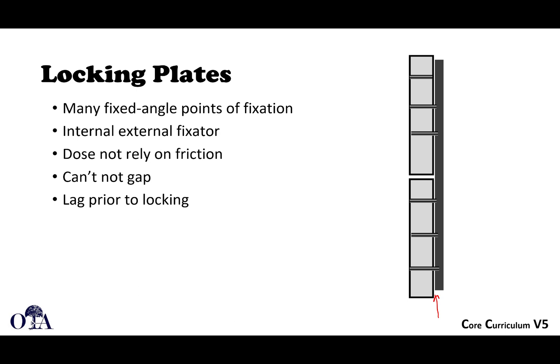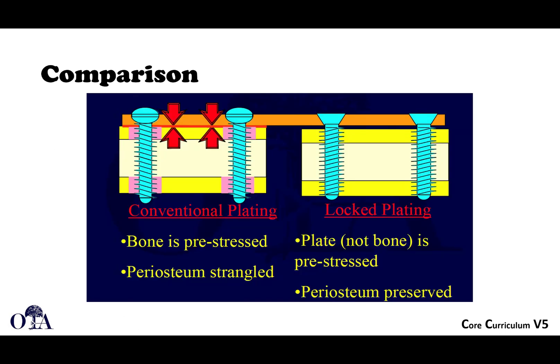With locked plating, it is fixed-angle and cannot gap. For hybrid fixation using both cortical and locking screws, you must always place your cortical screws first if you're trying to achieve friction, and then add the locking screws — which are particularly useful in osteoporotic bone.